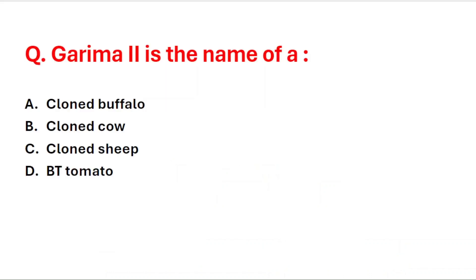First question: Garima 2 is the name of — A: cloned buffalo, B: cloned cow, C: cloned sheep, D: Bt tomato. The right answer is option A, that is cloned buffalo. Garima 2 is the name of a cloned buffalo.